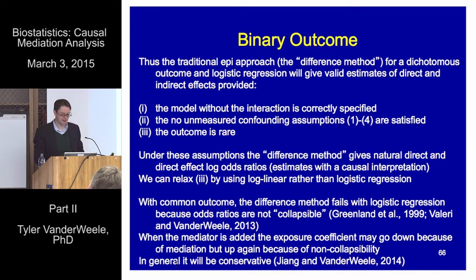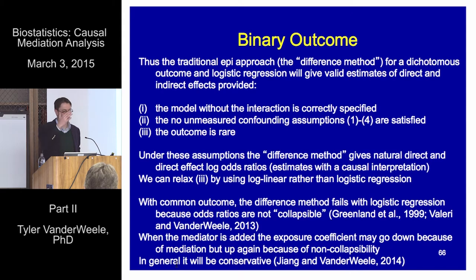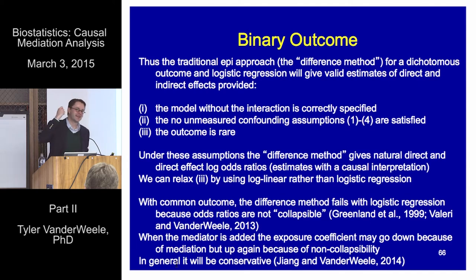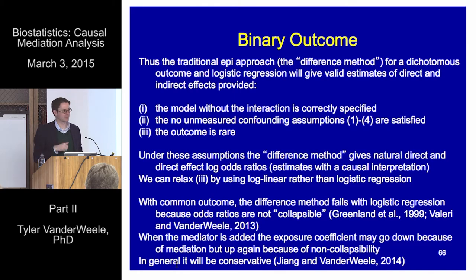Under some pretty mild assumptions, you actually get a conservative measure of mediation using the difference method. That difference between the coefficients with and without the mediator is conservative for the indirect effect. So if you use the difference method with logistic regression and it looks like you have some evidence for mediation, you actually do have evidence, provided you've controlled for confounding. But if it looks like you have no evidence for mediation, you can't say anything one way or another, because it could just be due to this non-collapsibility issue.